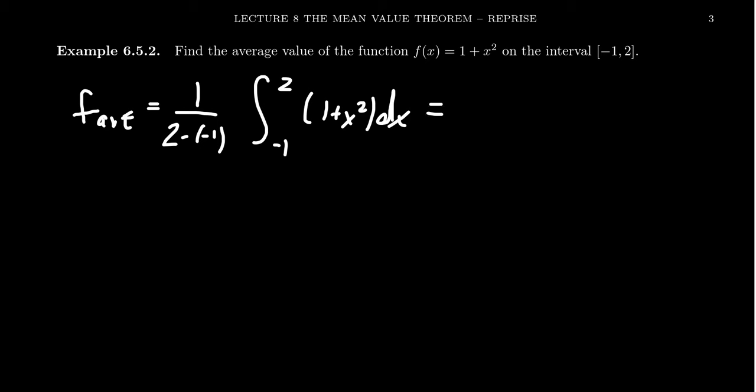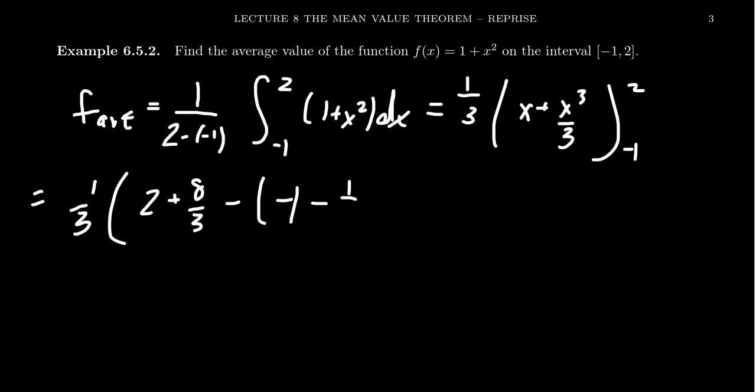Simplifying the interval there, 2 minus negative 1 is 3, so the length of the interval is 3. Finding the antiderivative for 1 plus x squared, we get x plus x cubed over 3. Plug it in negative 1 and 2. When you plug in 2, you're going to get 2 plus 8 thirds. Then we plug in negative 1. You're going to get a negative 1 minus a third.